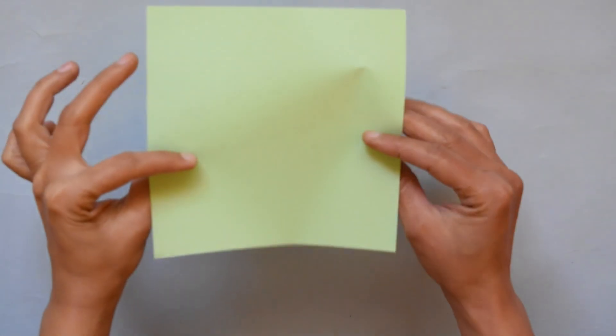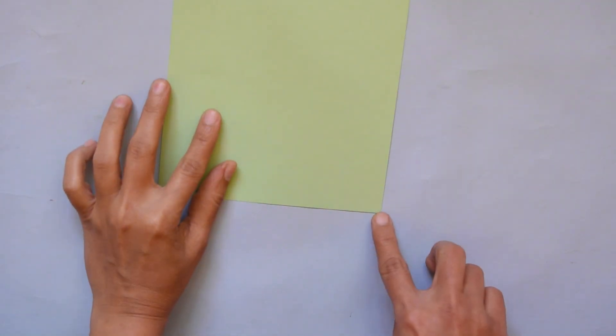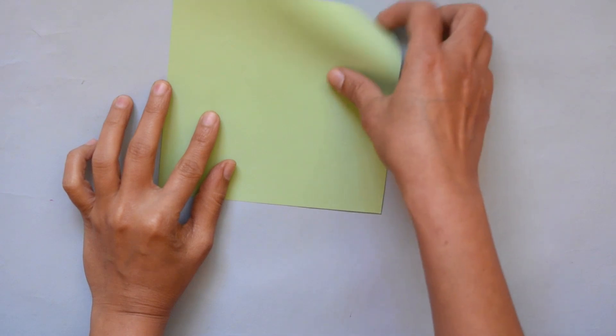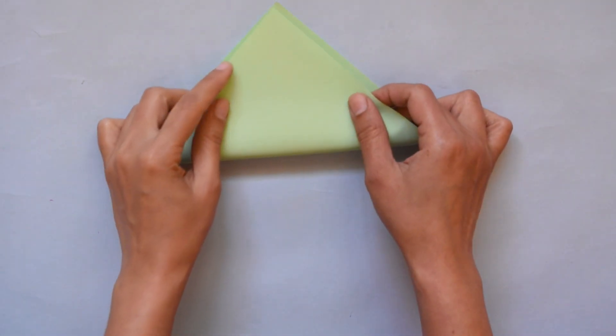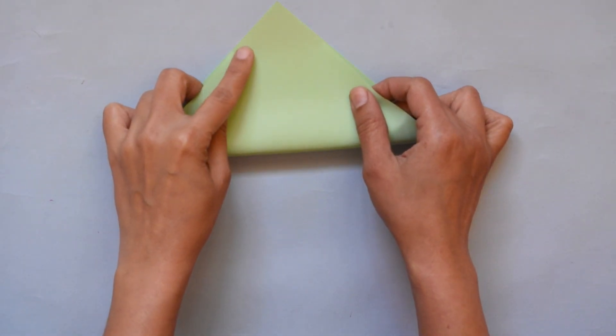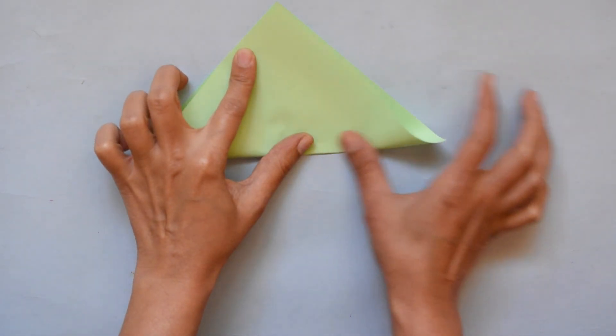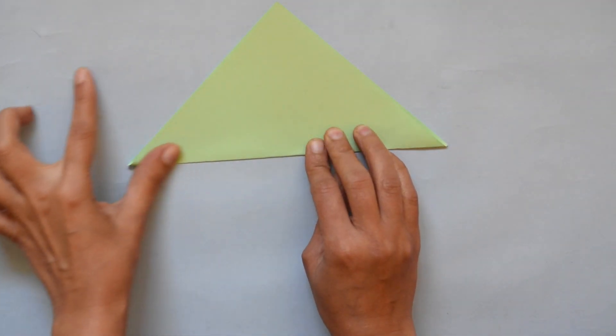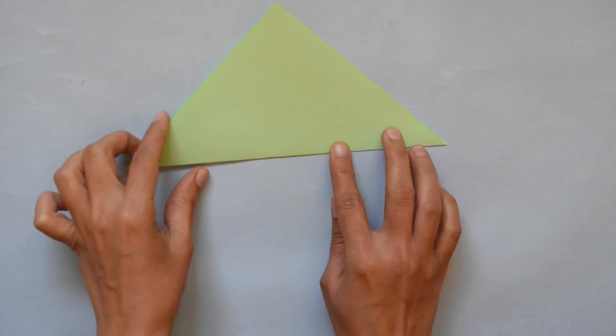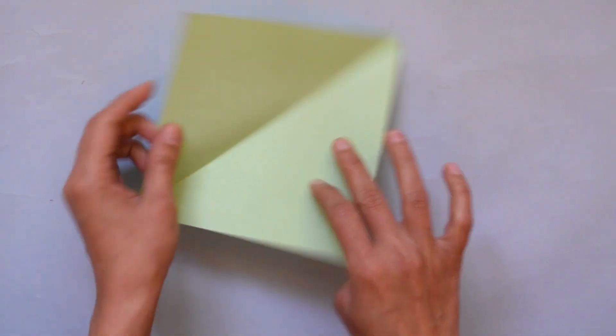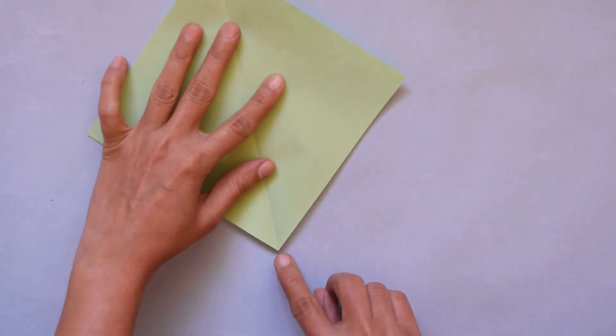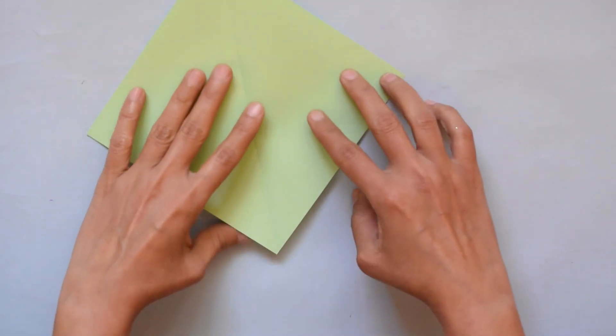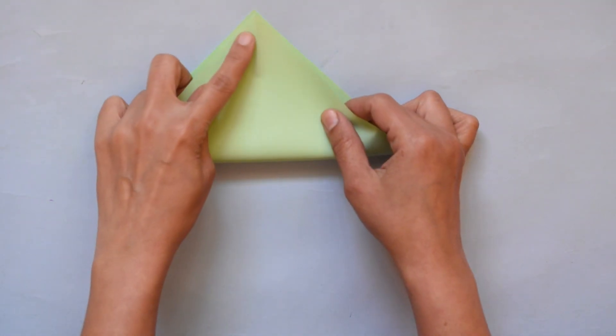Here I have one square paper. We have four corners. Put two corners on each other and press it. Now put the other two corners on each other and press it.